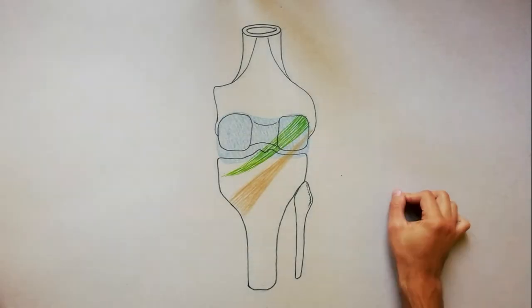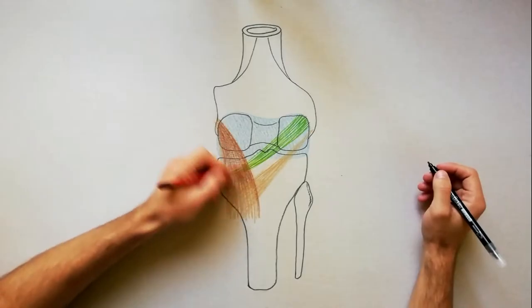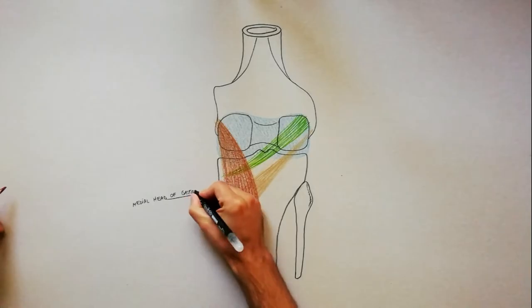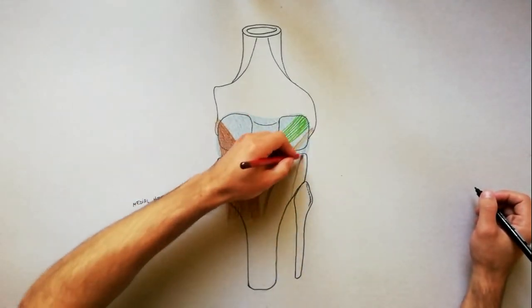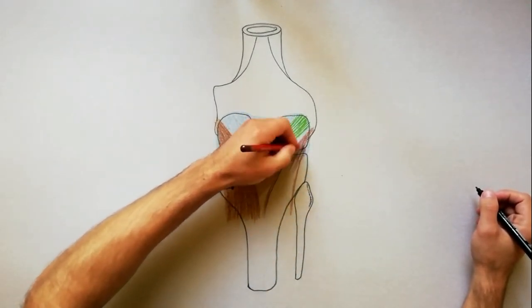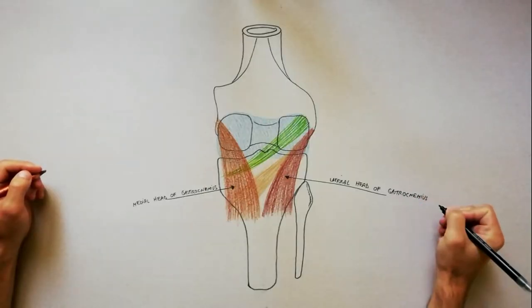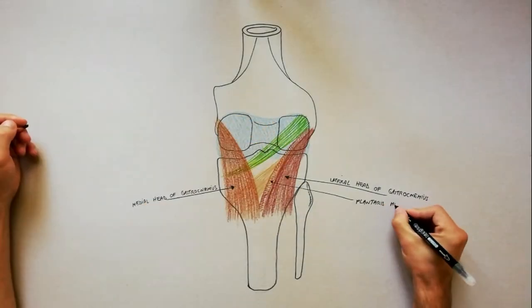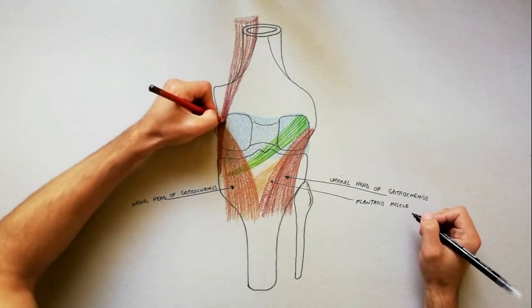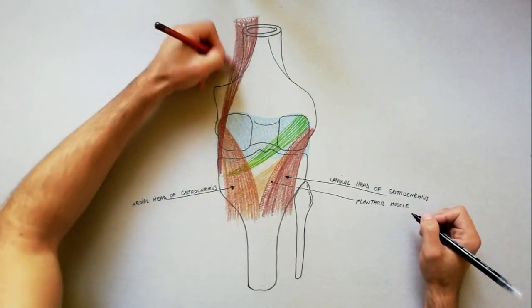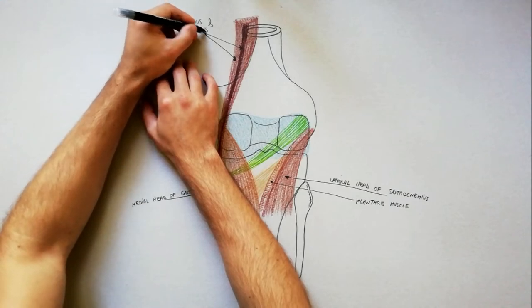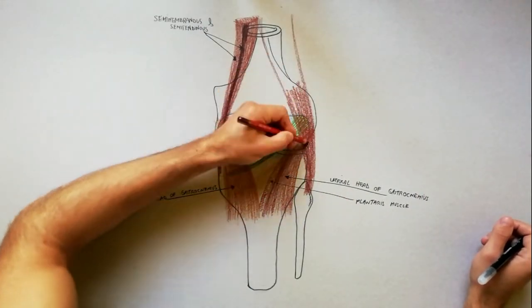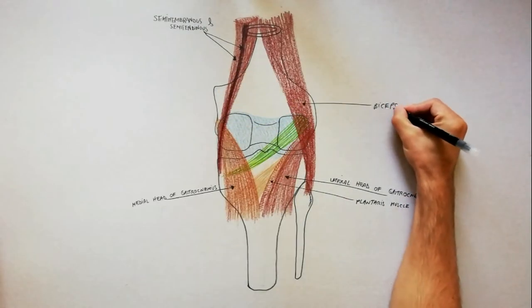The boundaries of the fossa are: inferior and medial, the medial head of the gastrocnemius muscle; inferior and lateral, the lateral head of the gastrocnemius muscle and plantaris muscle; superior and medial, the semimembranous and semitendinous muscles; superior and lateral, the biceps femoris muscle.